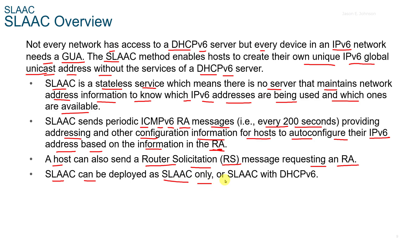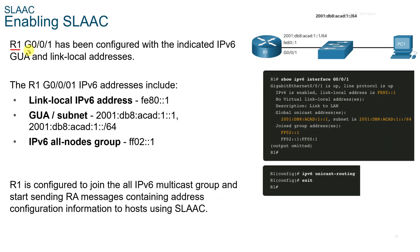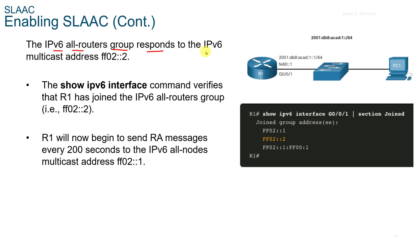SLAAC can be deployed as SLAAC only, or SLAAC with DHCPv6. When SLAAC is enabled, Router 1 has its G0/0/1 configured with V6 GUA and link local addresses. R1 is configured to join all IPv6 multicast groups and start sending RA messages containing address configuration information to hosts using SLAAC. The V6 all-routers group responds to the V6 multicast address FF02::2. The show IPv6 interface command verifies that R1 has joined the all-routers group. R1 then begins sending RA messages every 200 seconds to the V6 all-nodes multicast address FF02::1.